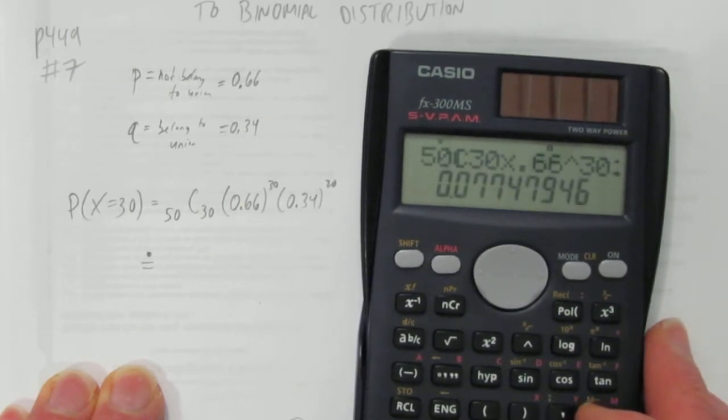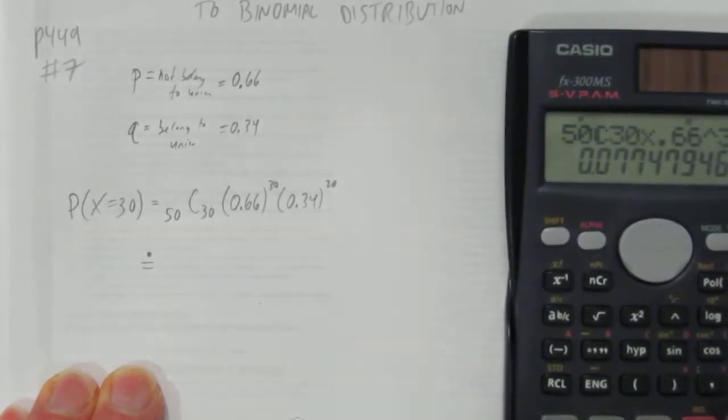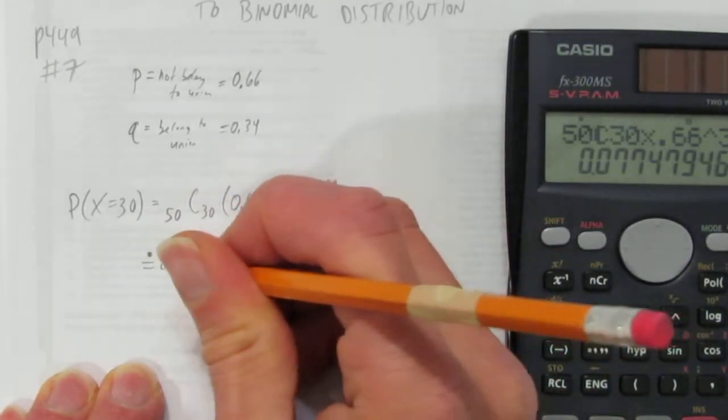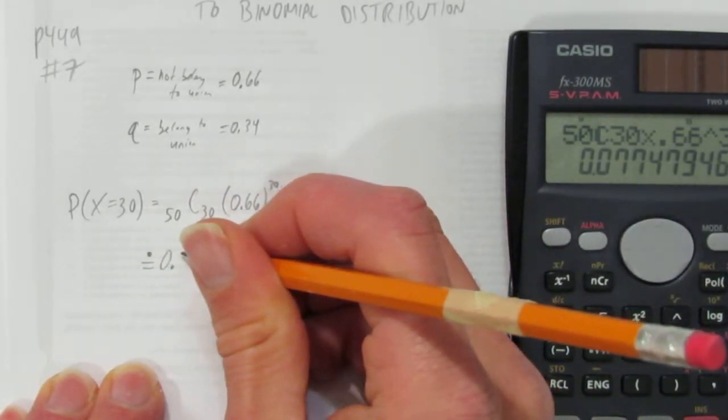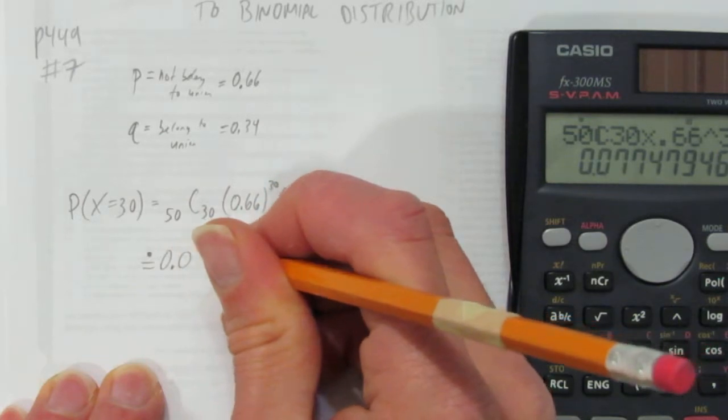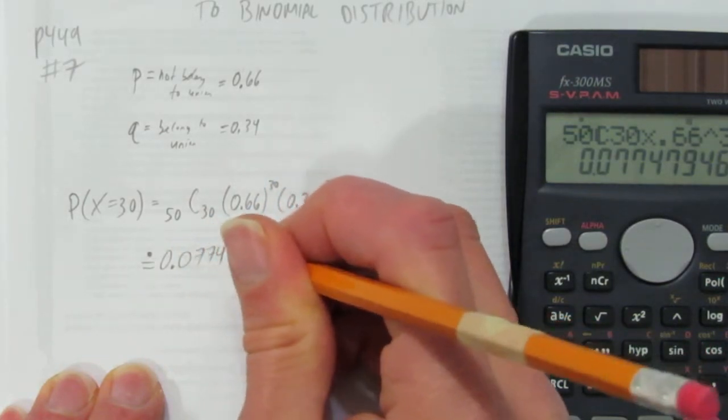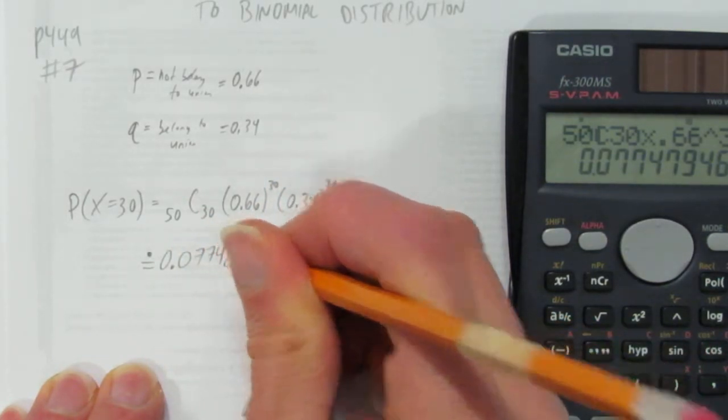The calculator takes a few seconds and gets the probability is approximately zero. Let's round it to five decimal places, 0.07748, and round that last seven up to an eight.